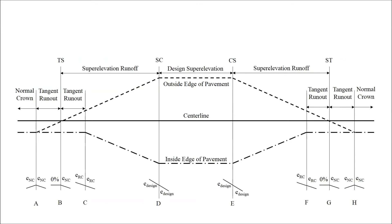The cross section of the pavement must be rotated about the center line or edge line of a highway to create superelevation. Rotation about the edge line can be necessary when underground utilities or water features could be problematic, as it ensures no part of the pavement will go lower in elevation than a section in normal crown, unlike center line rotation which can push the inside edge lower. However, it is more common to have center line rotation, and this discussion will focus on center line rotation.